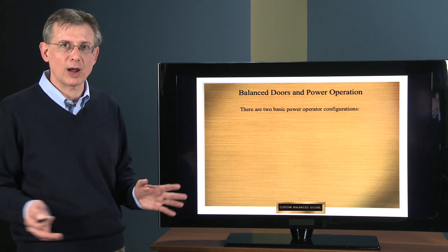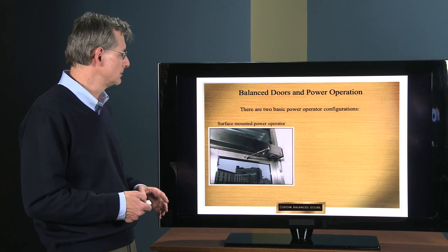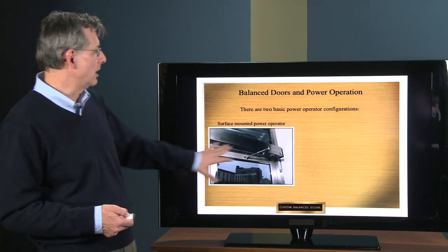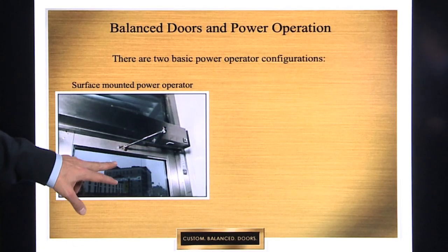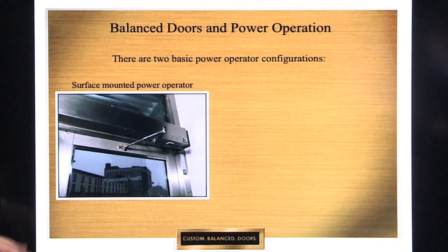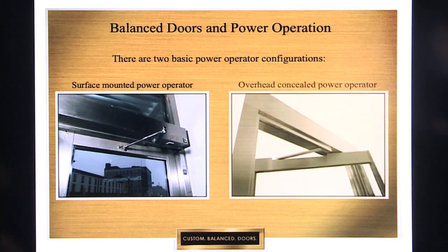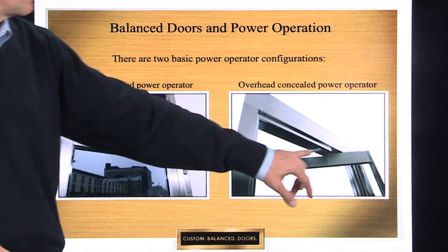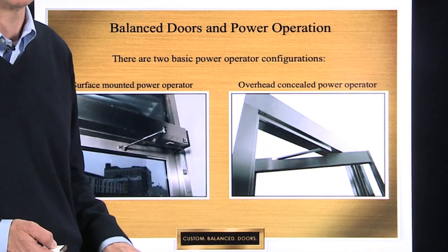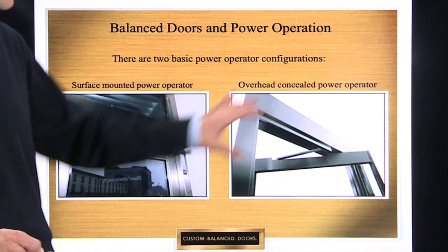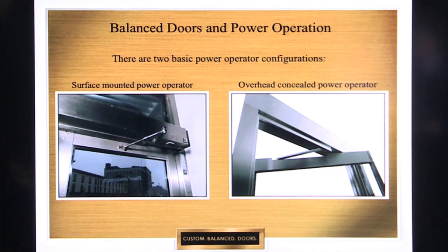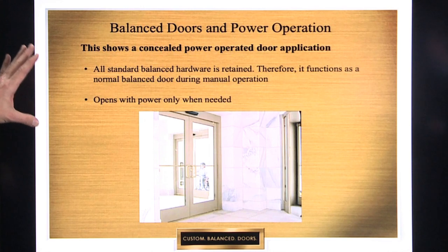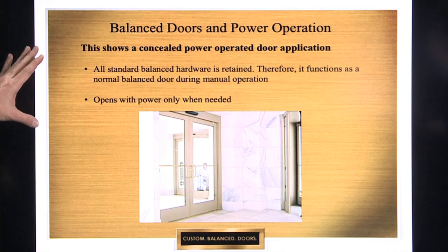So there are two basic power operator configurations. One is the traditional surface mounted type power operator box tacked on with exposed arm to push the door open, very unsightly. The other type is an overhead concealed power operator with an arm that is concealed when the door is in the fully closed position. It does require a larger header. We're going to talk about mainly the concealed overhead power operation.